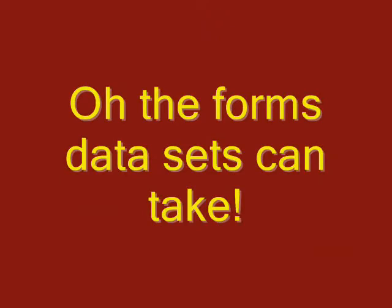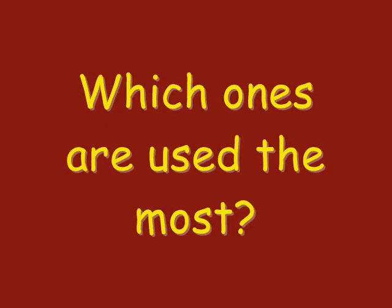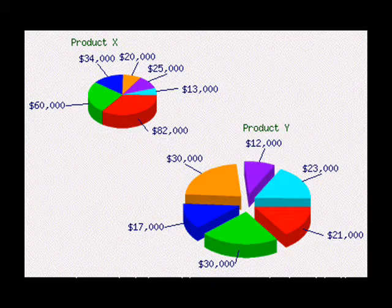Data sets can take a ton of graphical forms. Here's just a couple of the more popular forms that today's numbers are really into. Most handy for comparing parts to the whole, first up is the pie chart. Delicious. Next up is the line graph. Here we are comparing the actual versus the predicted human urge to run up the down escalator across various ages.